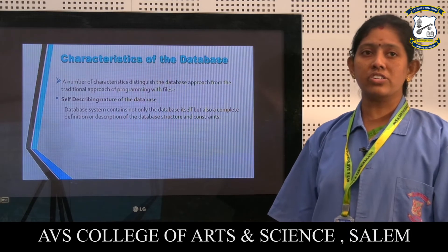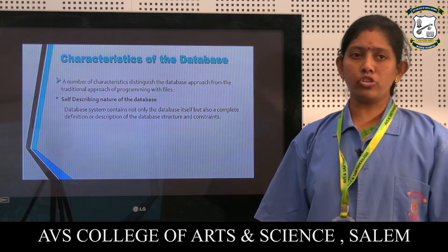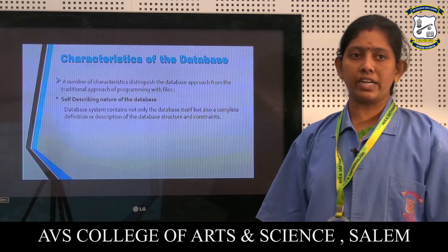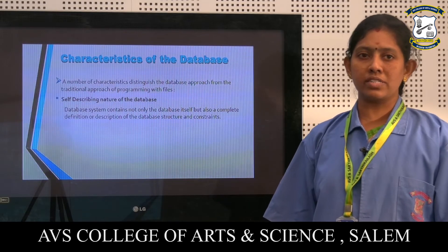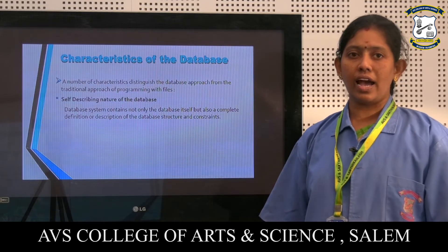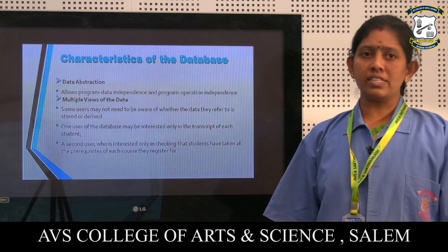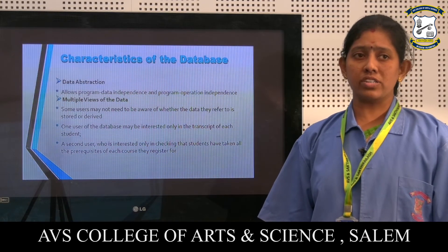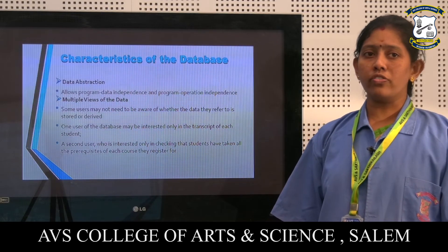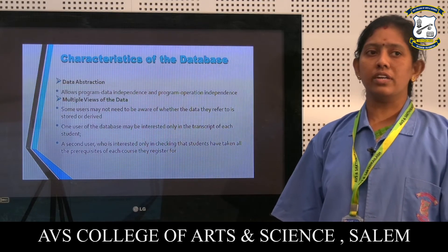Next we are going to see the characteristics of a database. A number of characteristics distinguish the database approach from the traditional approach of programming with files. The self-describing nature of the database: the database system contains not only the database itself, but also a complete definition and description of the database structure and constraints. Database abstraction: it allows program data independence and program operation independence. Next characteristic is multiple views of the data — some users may not need to be aware of whether the data they refer to is stored or derived.